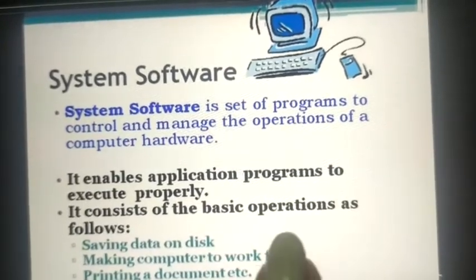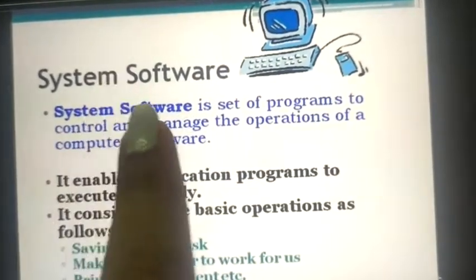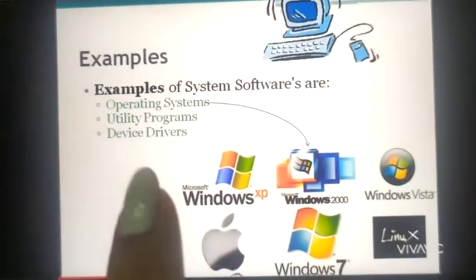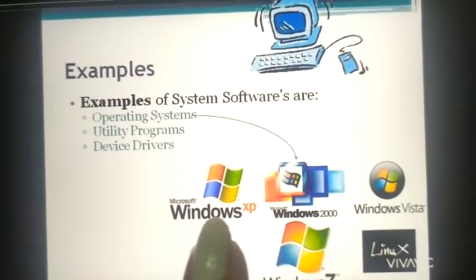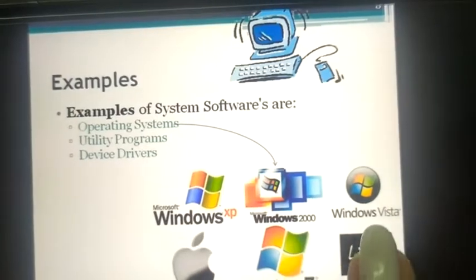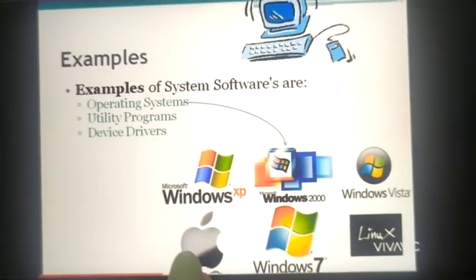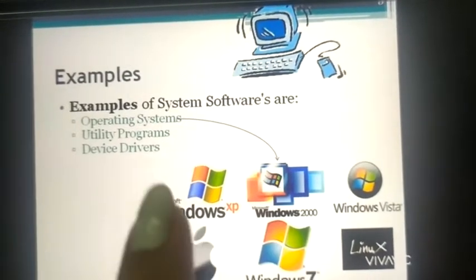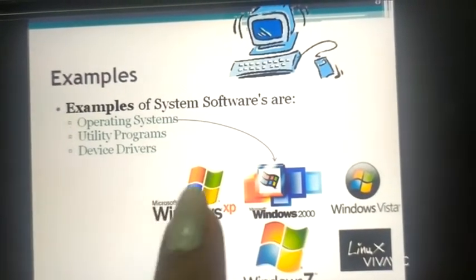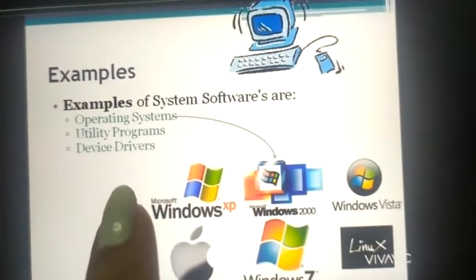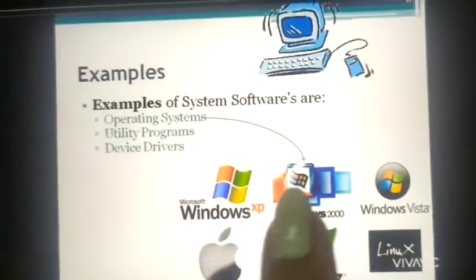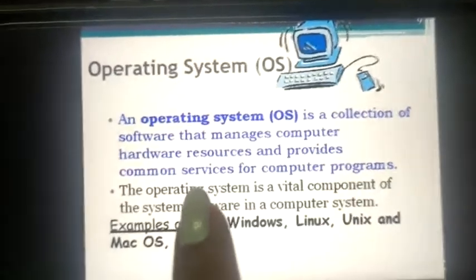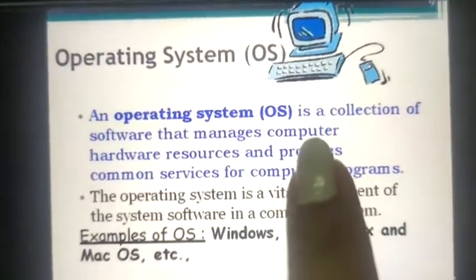These are all the operations performed by the computer system. Examples of system software include Windows XP, Windows 2000, Windows Vista, Linux, Apple Mac, and Windows 7 — these are all examples of operating systems. Utility programs and device drivers are also examples of system software.